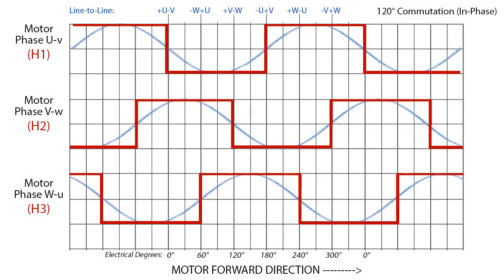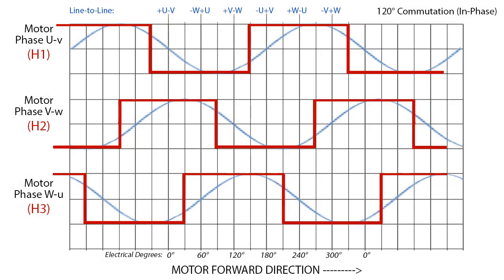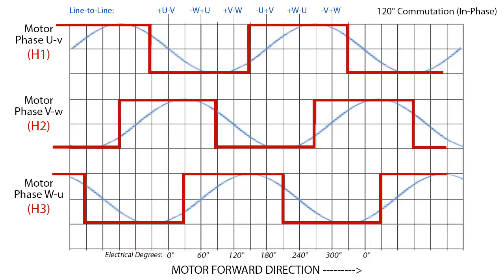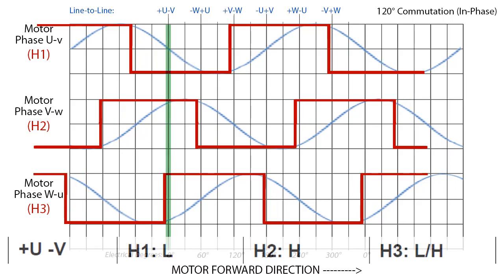If the commutation gets out of alignment, then the toggle point will not change like we need to see. Or the pattern will be completely wrong.